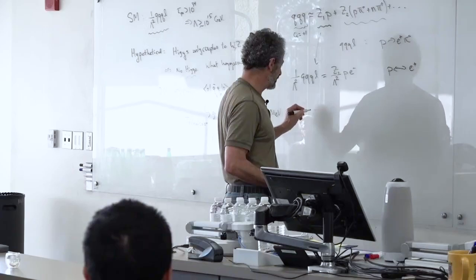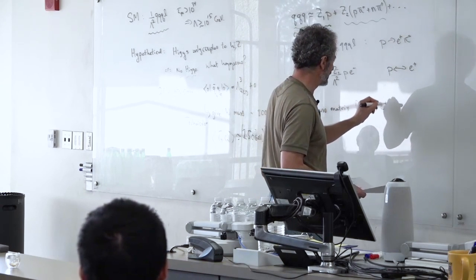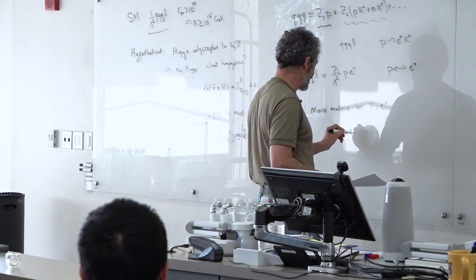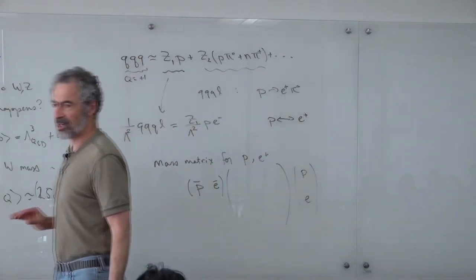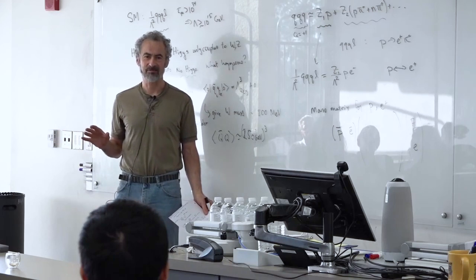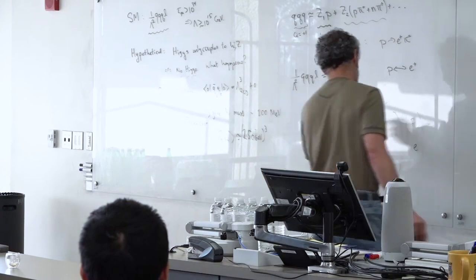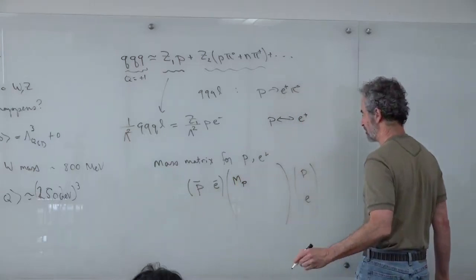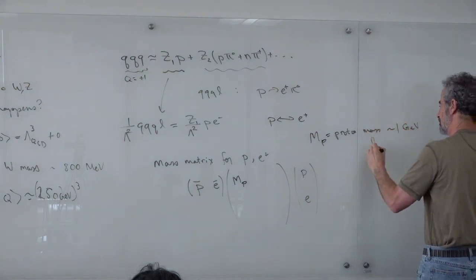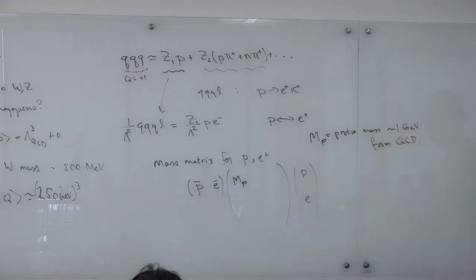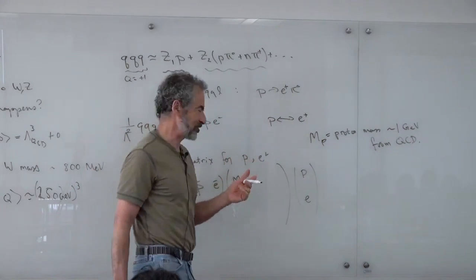Let's look at the mass matrix for the proton and the positron. In terms of fields, that's (p̄, ē) times a mass matrix times (p, e). The proton gets most of its mass not from the Higgs but from QCD — only a small part of the proton mass can be attributed to the Higgs; almost all comes from chiral symmetry breaking. So the proton mass in that corner is pretty much unchanged. And the electron mass, because there's no Higgs, you can't write down an electron mass term in your Lagrangian that's SU(2)×U(1) invariant, so you get zero there.